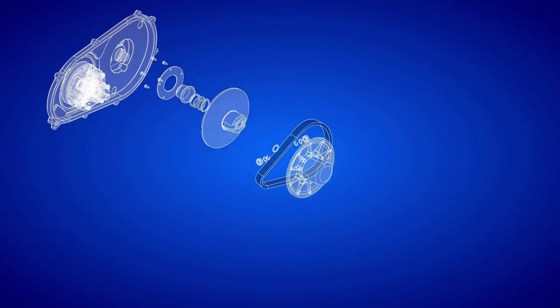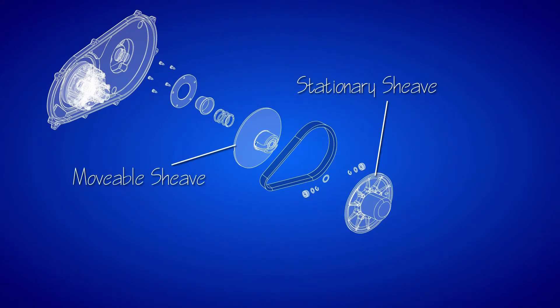Located next to the drive clutch is the driven clutch, which is mounted to the input shaft of the transmission, and like the drive clutch, also has a stationary and movable sheave, which responds to the movement of the belt and drive clutch.